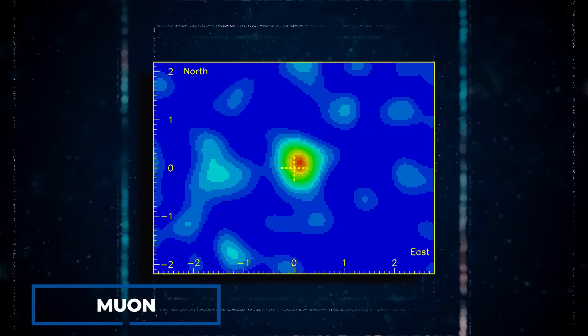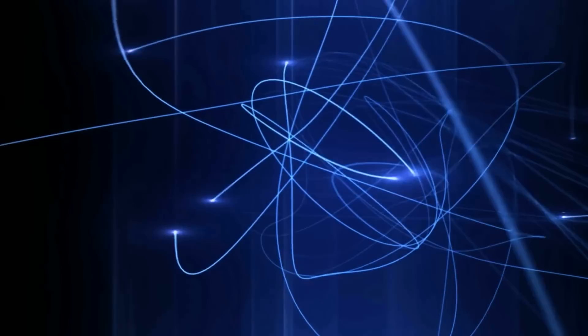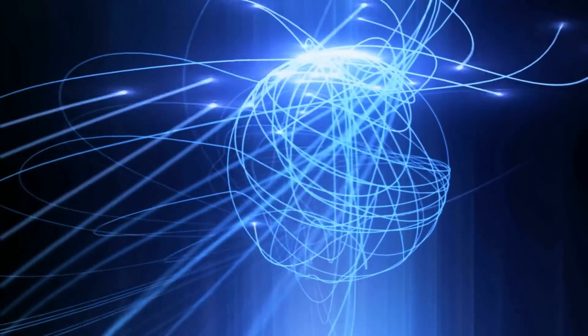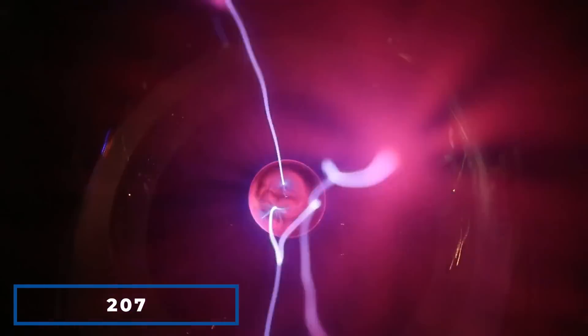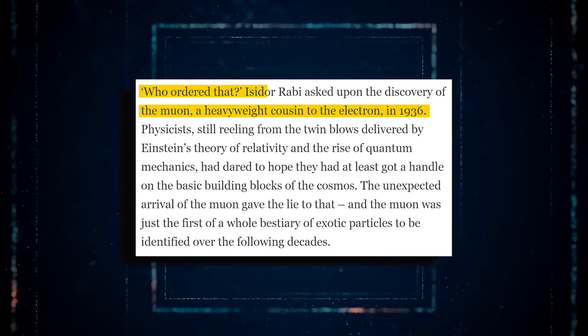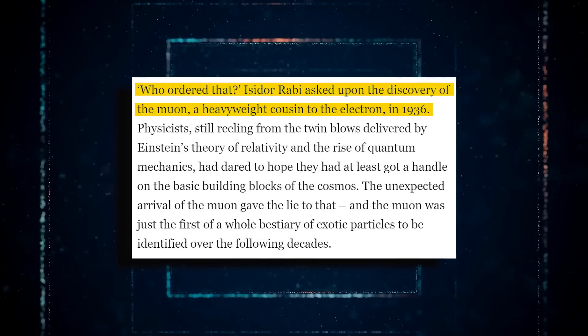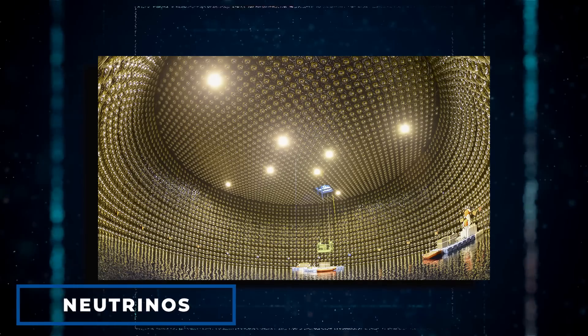Take the muon, a subatomic particle that sprang to prominence last year. Muons are sometimes known as fat electrons because they have the same negative electrical charge as electrons but are 207 times more massive. When muons were discovered in 1936, physicist Isidore Rabi asked, Who ordered that? Nobody understands where muons fit into the big picture. They are produced by cosmic ray collisions as well as collider events and decay radioactively in microseconds into a fizz of electrons and the ghostly particles known as neutrinos.